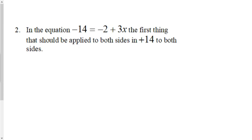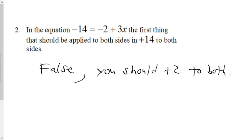Question two: In the equation -14 = -2 + 3x, the first thing you should do is apply a positive 14 to both sides. That is false. The first thing you should do is add two to both sides. Right, and that's the correct answer.